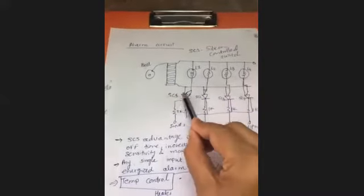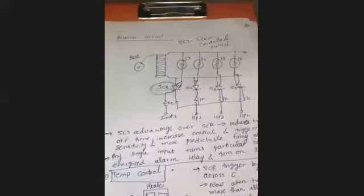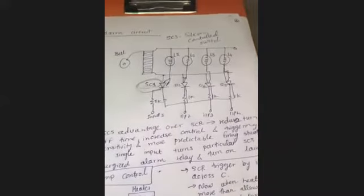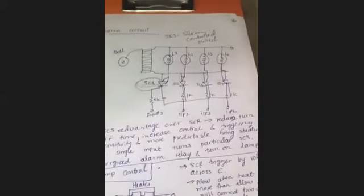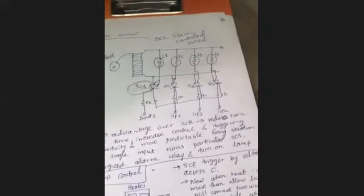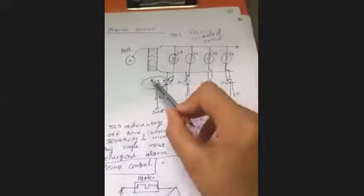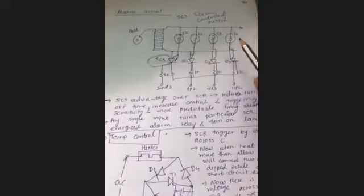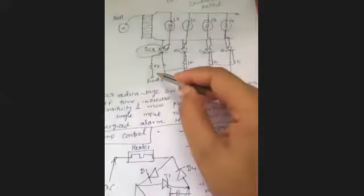We use SCS — the Silicon Controlled Switch. One advantage of SCS over SCR is its turn-off capability; we need commutation for class A, B, or C operation. SCS is sensitive to triggering. When the alarm condition is met and the lamp turns on, the SCS directly energizes the lamp.